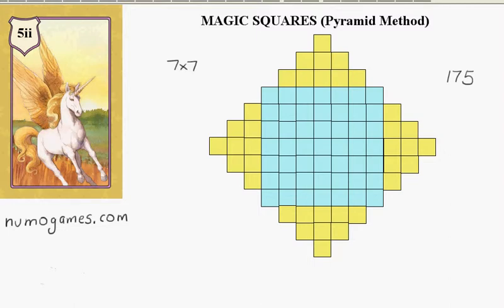Magic Squares Pyramid Method, Part 2. This is a 7x7 magic square, the blue one, and we're going to construct the pyramid. As you can see, there are yellow tiles at each of those edges. This technique can be used for all odd number magic squares. You can also use the Siamese method, but in this case, I think you'll find the pyramid method is probably easier.